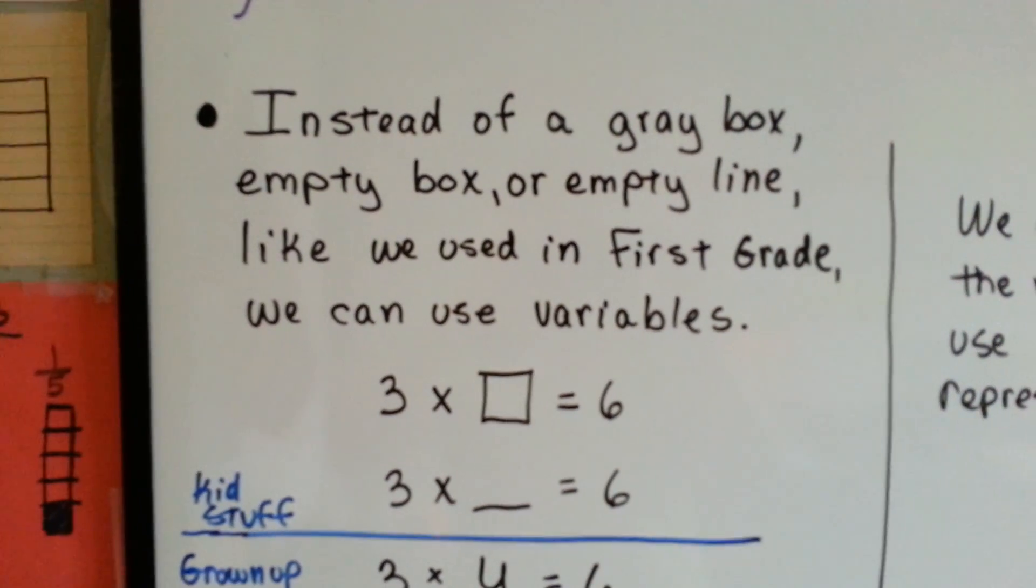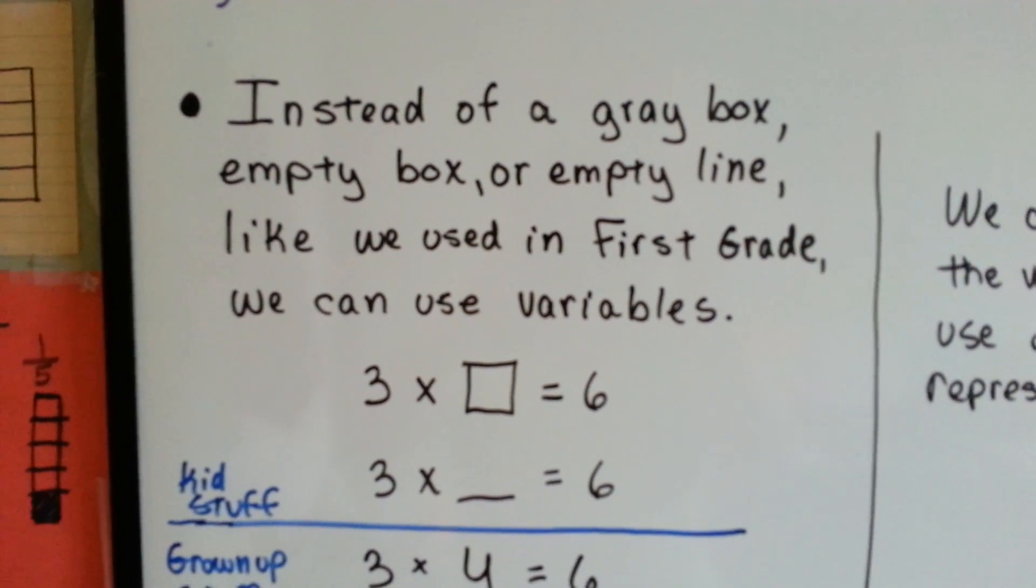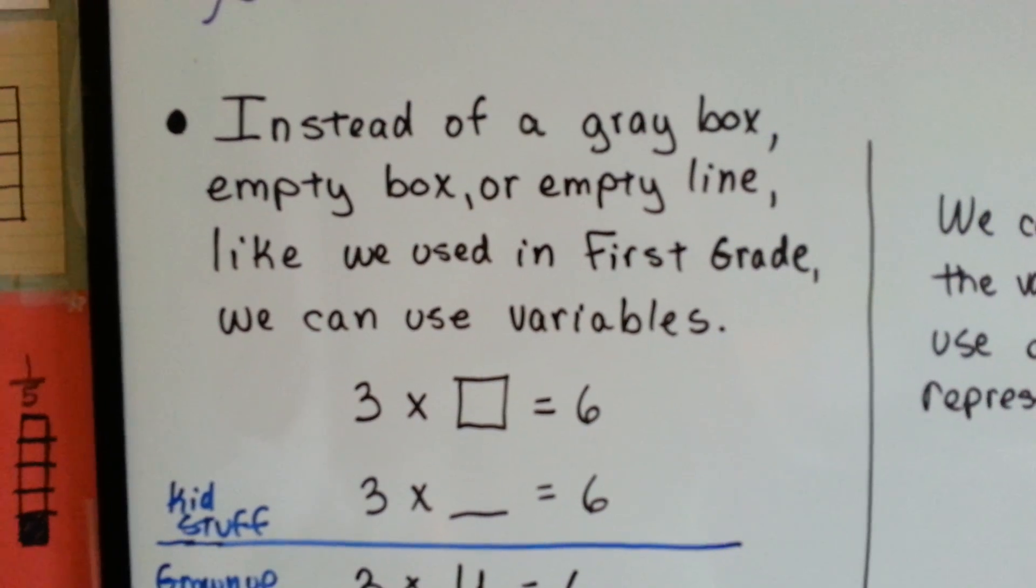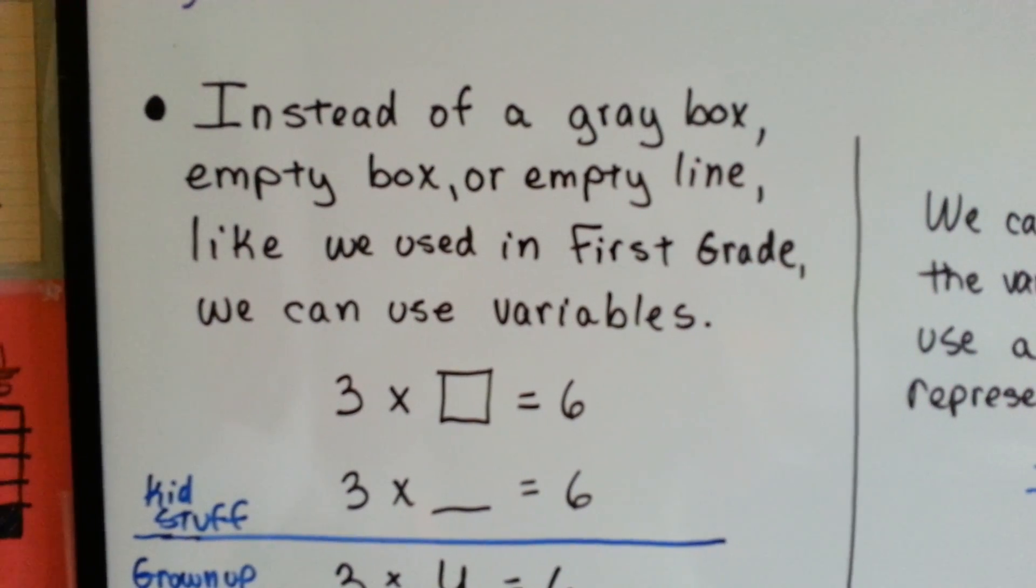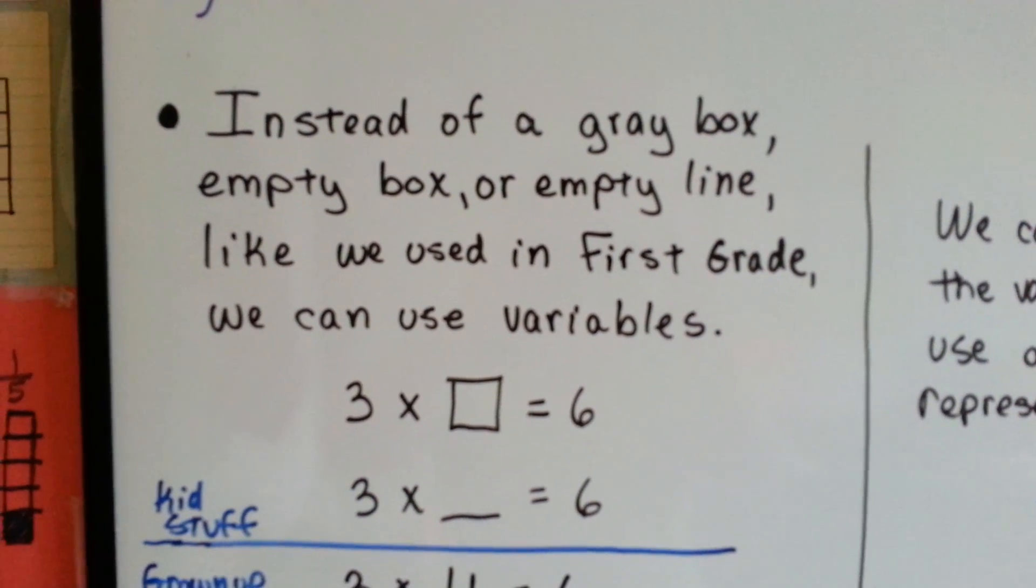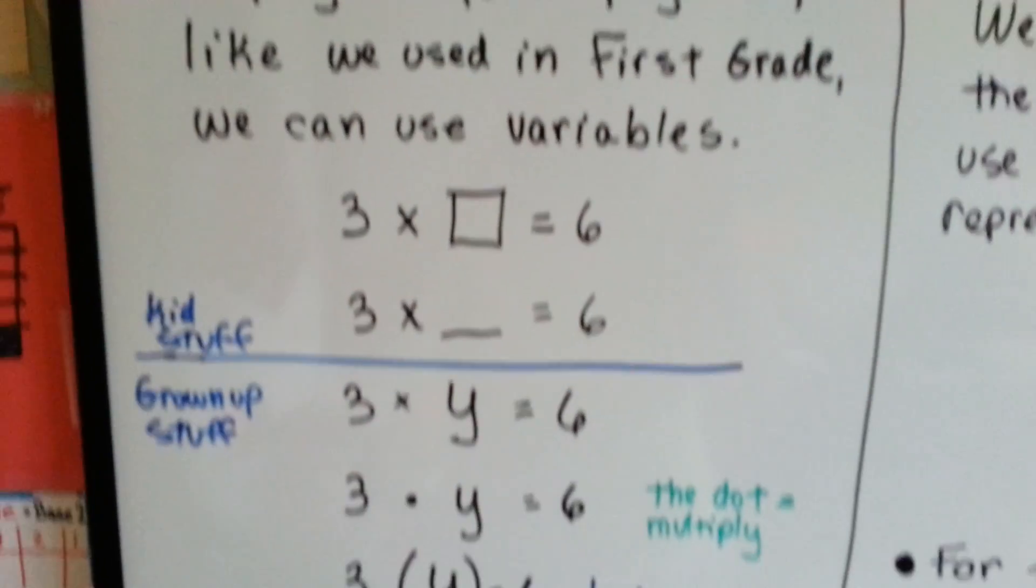Instead of a gray box, an empty box, or an empty line like we used in first grade, we can use variables. The kid's stuff was 3 times a box equals 6 and you wrote the number in the box, or 3 times a line equals 6 and you wrote the number on the line.